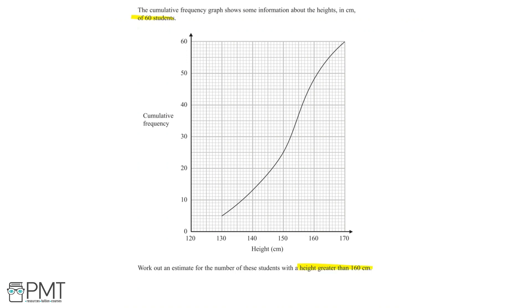We can start by drawing a vertical line upwards from the point x equals 160 centimeters. Now we can go across to find the cumulative frequency at this point. So now that we have drawn a line going across, we can see that the cumulative frequency at the point where the height is 160 centimeters is approximately 48.